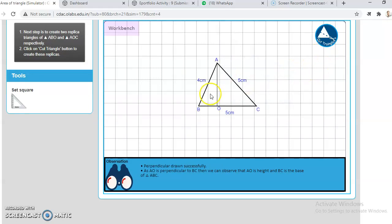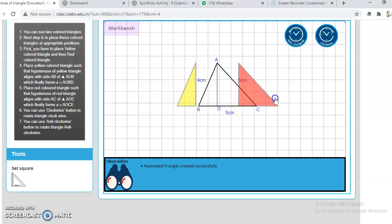Now we have to cut a triangle form here, this one AOP and AOC.